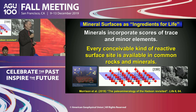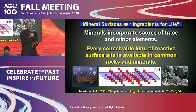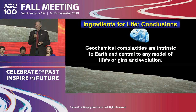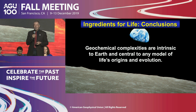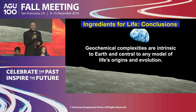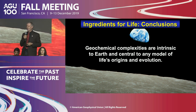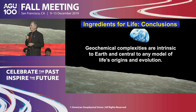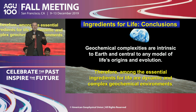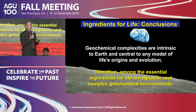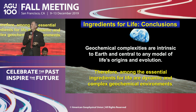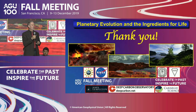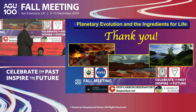In terms of ingredients of life, this is really good news for terrestrial planets everywhere. Conclusions: geochemical complexities are intrinsic to Earth and central to any model of life's origin and evolution. Therefore, among the essential ingredients of life must be dynamic and complex geochemical environments. Thank you very much, and I'm looking forward to the rest of the talks.